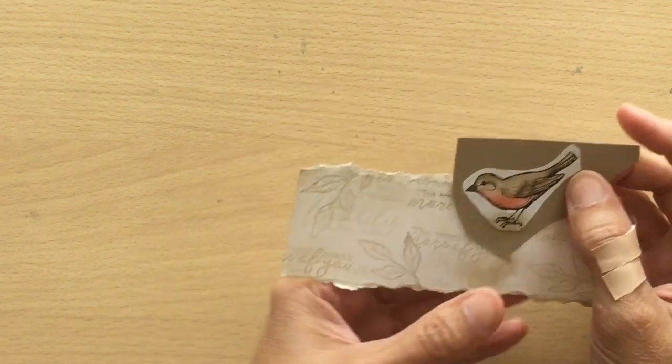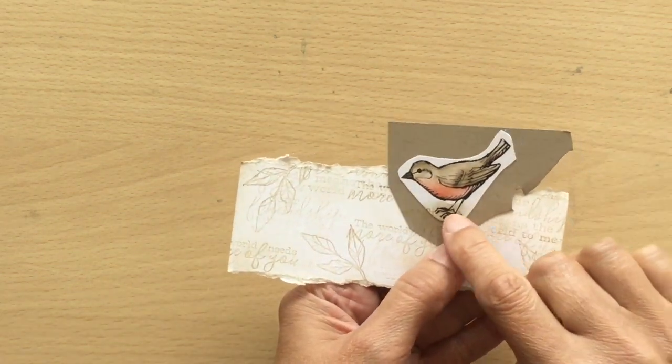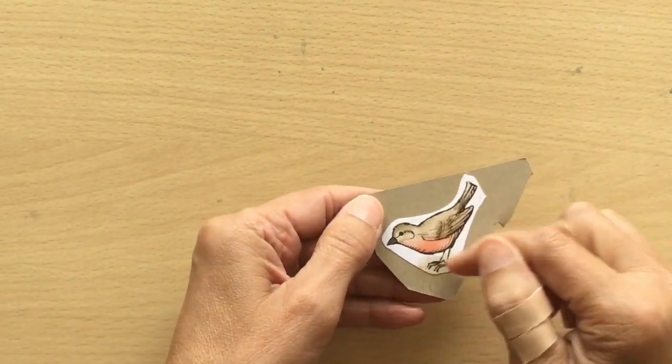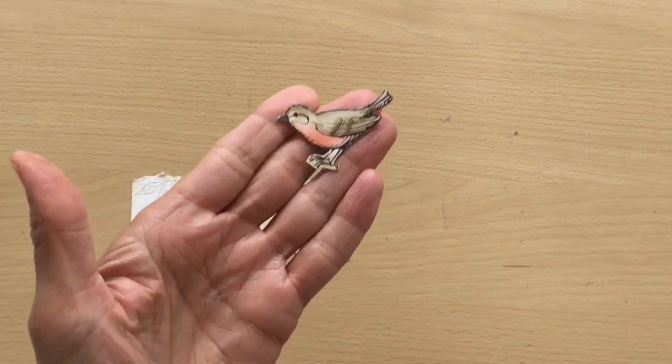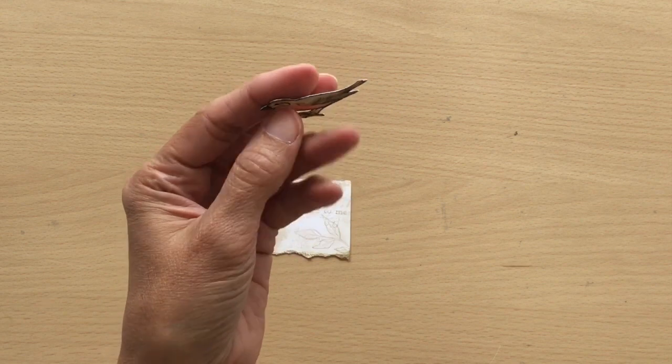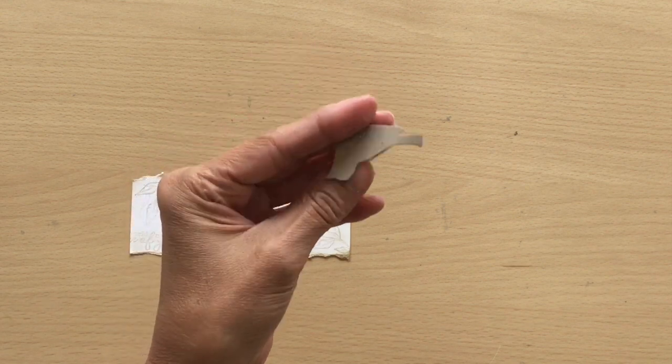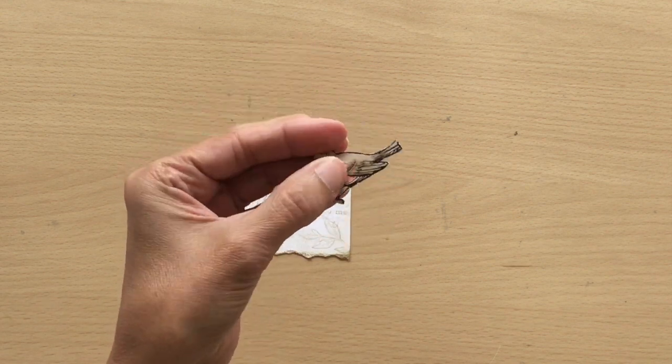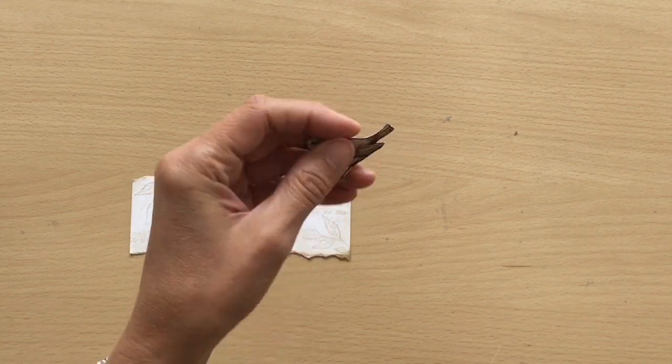So I'm just going to fussy cut that out now. So there's my little bird all ready to go. And my reasoning behind sticking him to the crumb cake was just to make him a little bit firmer, so he's not so floppy, so it'd make a good embellishment there.